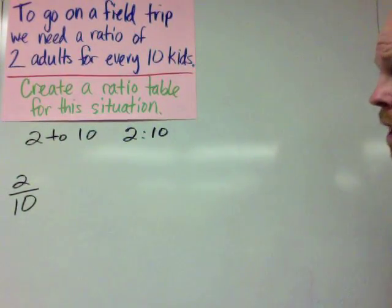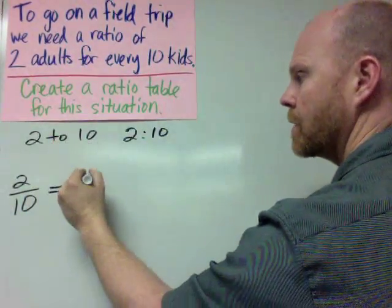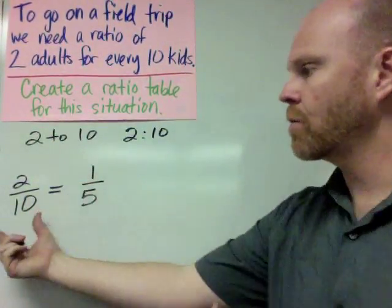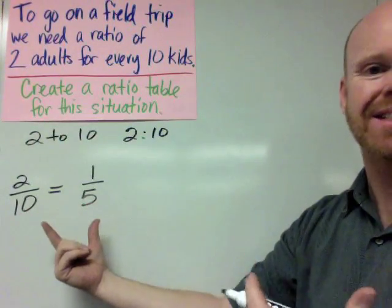For example, 2 to 10 is a ratio that can be simplified or reduced to 1 to 5. And these two ratios look different, but they're actually equivalent. It's kind of like saying the same thing.